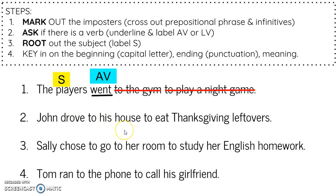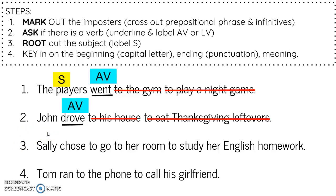Next sentence: "John drove to his house to eat Thanksgiving leftovers." I see a "to" — is it followed by a verb or a noun? To his house — house is a noun, so that's a prepositional phrase. Over here, "to eat" — eat is a verb, so that's an infinitive. The whole infinitive phrase is "to eat Thanksgiving leftovers" — I can get rid of that. Now I'm left with "John drove." Drove is definitely a verb and it's an action, so I'll underline it and label it AV. Who drove? John. So John is the subject. You can see how easy it is to find your subject and verb once you get rid of all those imposters.